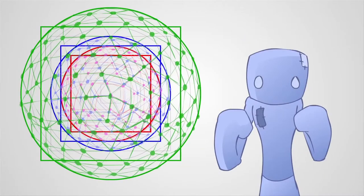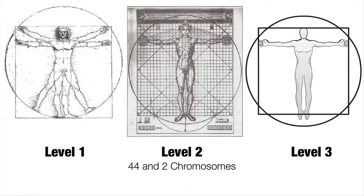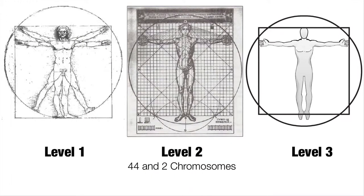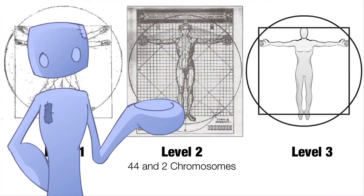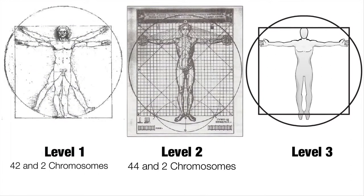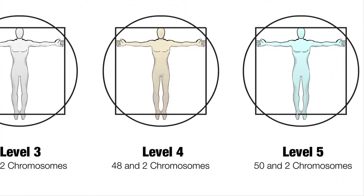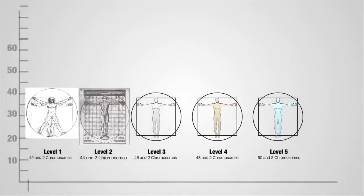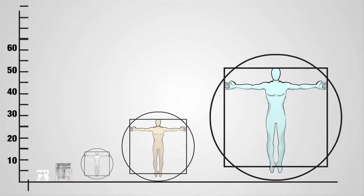What Thoth tells us is that every level of consciousness seen here not only has its own consciousness grid, but its chromosome change as well. The second level, where we are now, has 44 plus 2 chromosomes. To any scientist, this is basic biology. The first level, however, has 42 plus 2, and this third level has 46 plus 2. The fourth and fifth have 48 plus 2, and 50 plus 2, respectively.